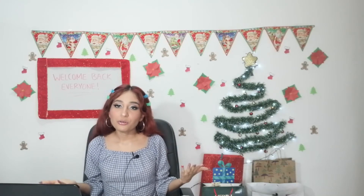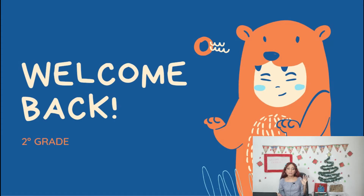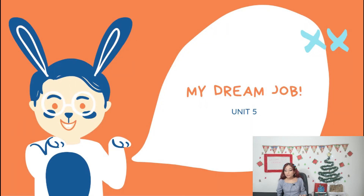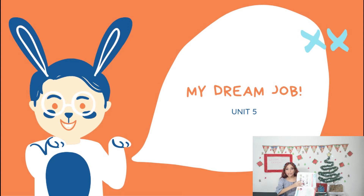Today we're going to start — as you can see I have my Christmas tree here, and this is the last week that I'm going to have it so I'm going to enjoy it. We're going to start reviewing Unit 5, and this unit is called 'My Dream Job,' as you can see here. I have my book and I hope you have yours by your side.